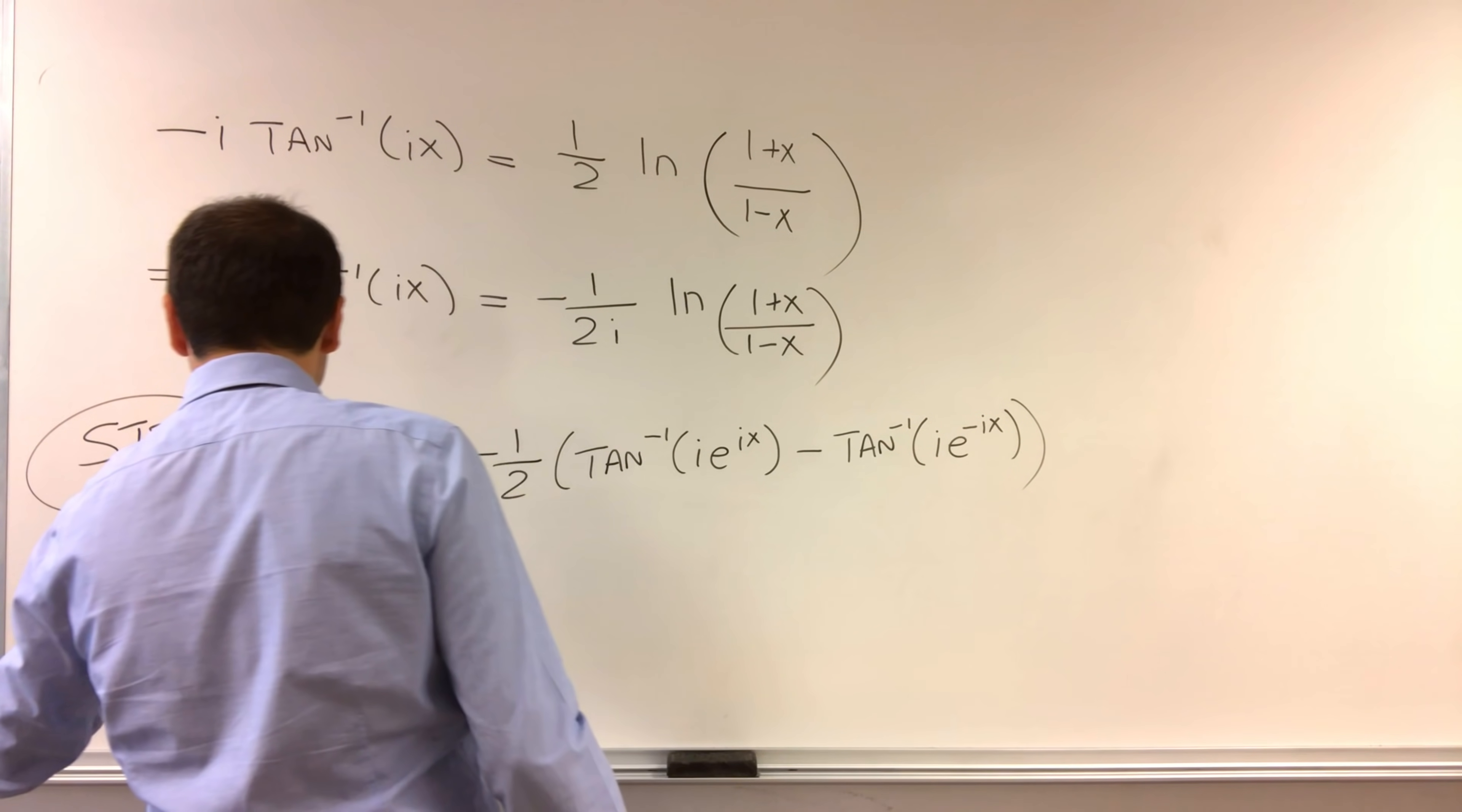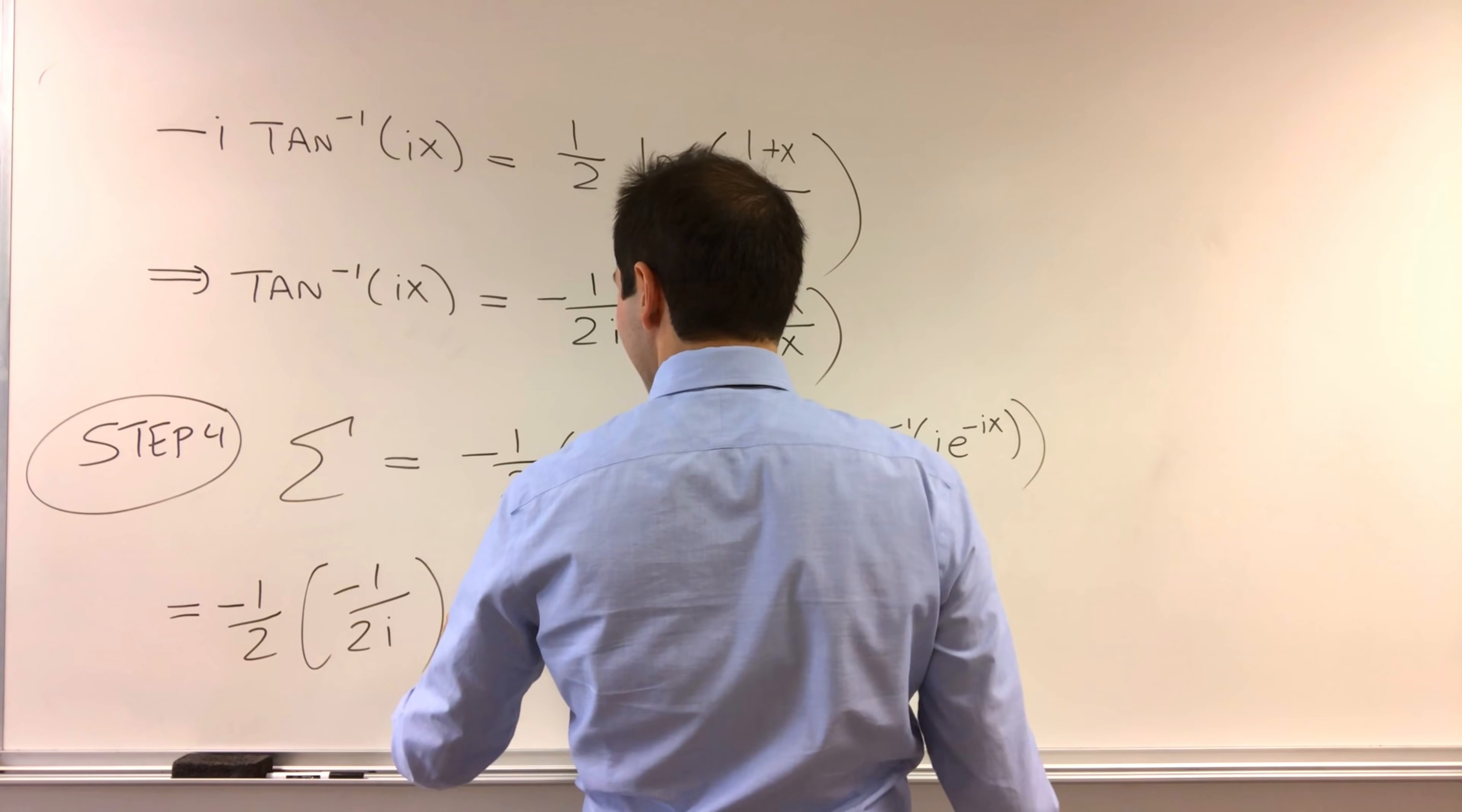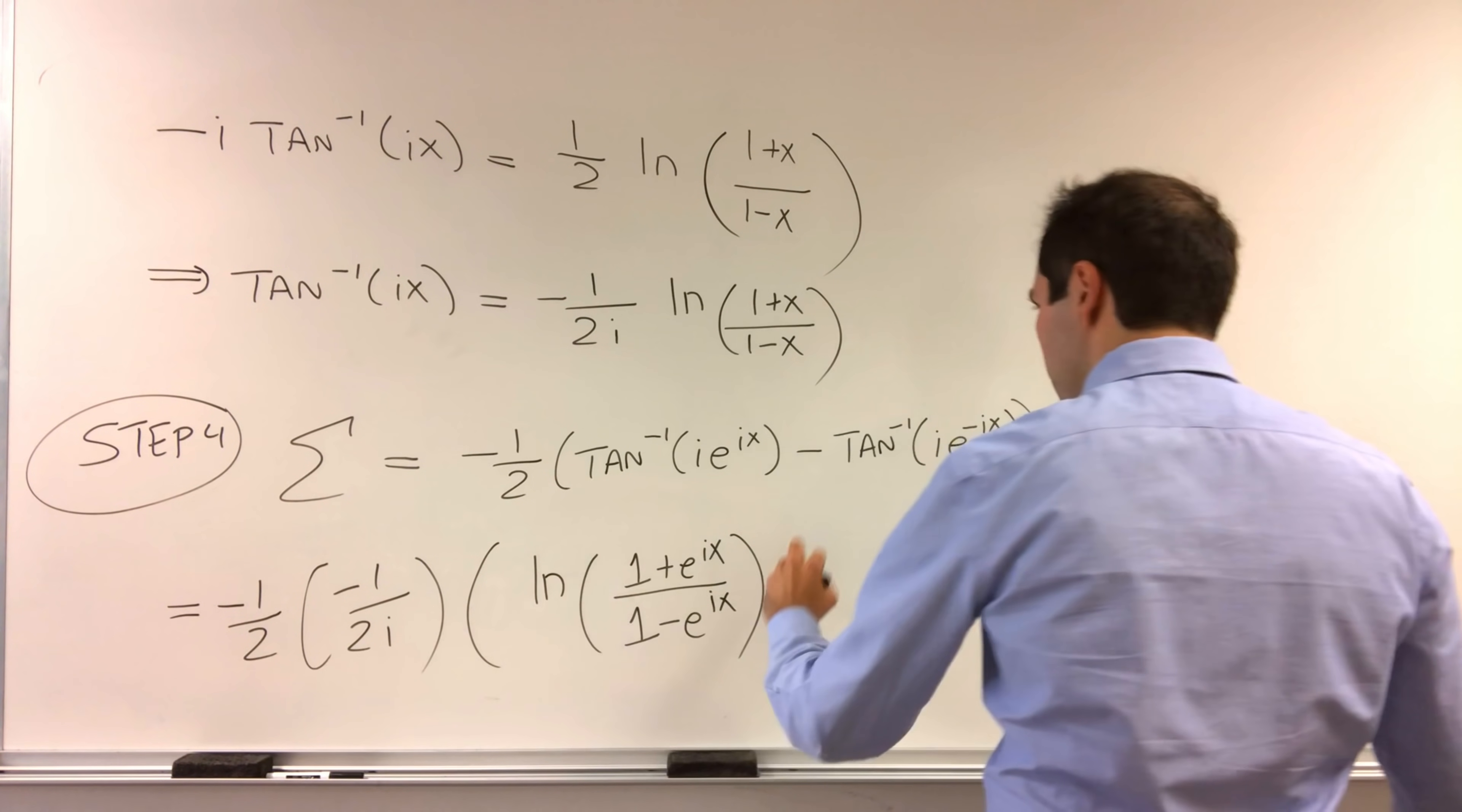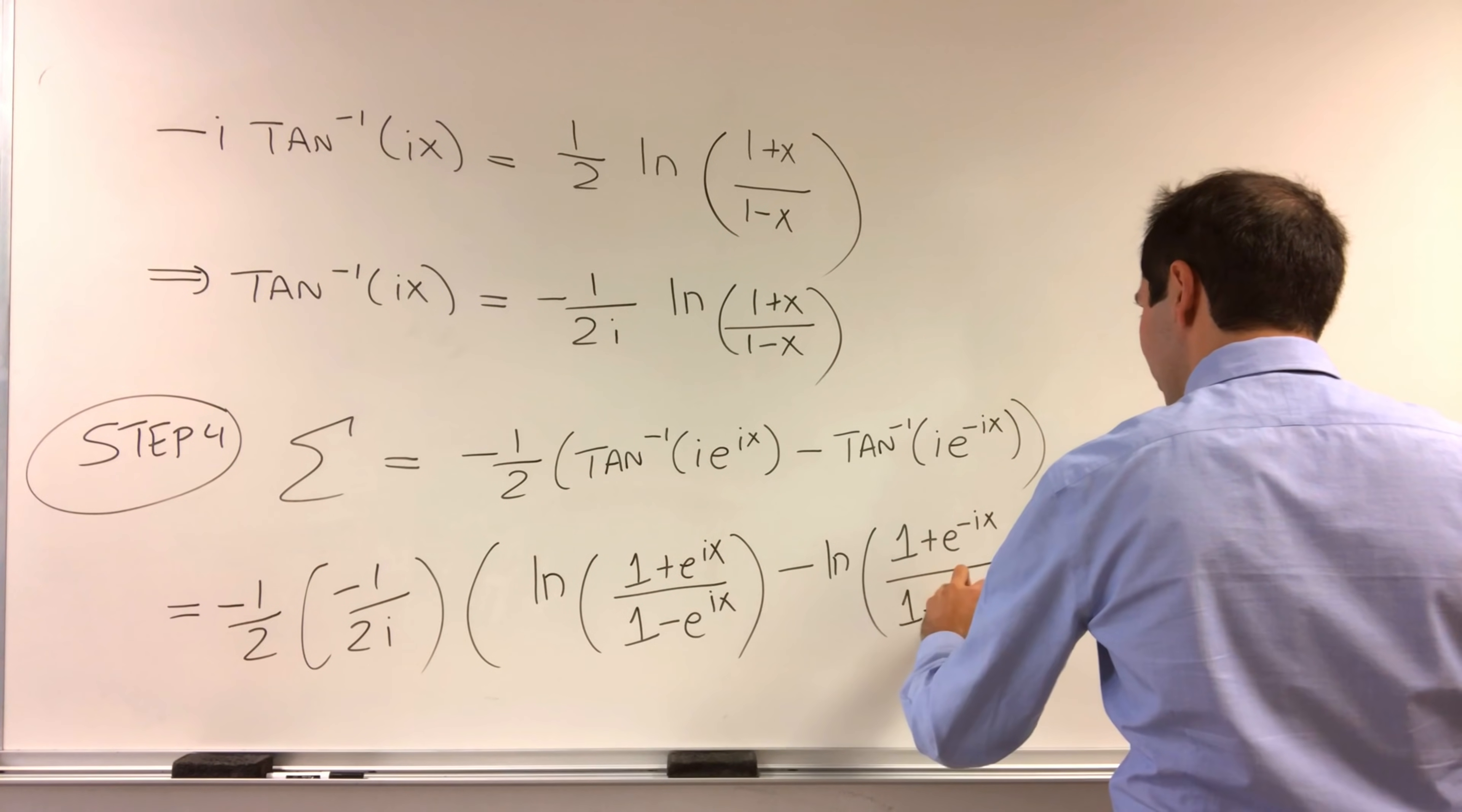So then what we get is, this is minus 1 half times minus 1 over 2i, and this ln business. So ln of 1 plus e to the ix over 1 minus e to the ix minus ln of 1 plus e to the minus ix over 1 minus e to the minus ix.